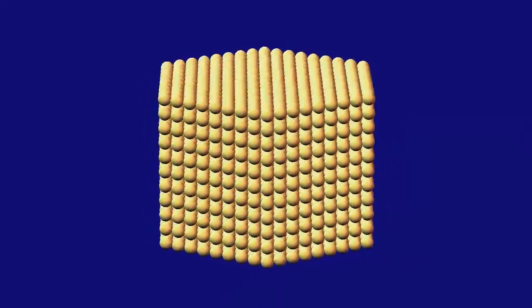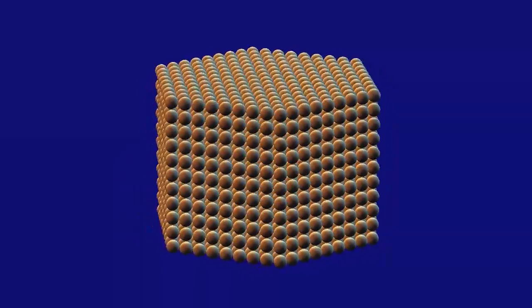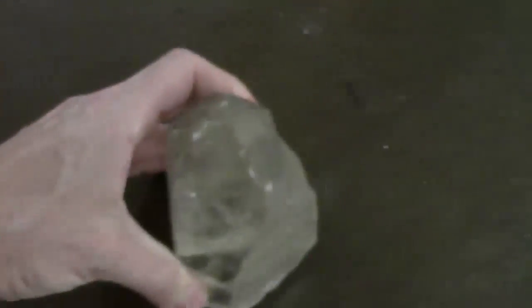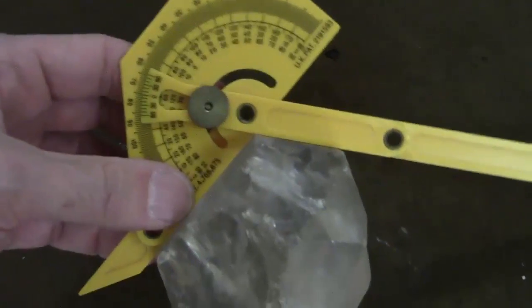Nowadays, we know that not just ice, but many minerals have a structure that can be understood as stacked hexagonal layers. For example, measure the angles in a crystal of quartz and you'll find the 120 degree angles that this model predicts.